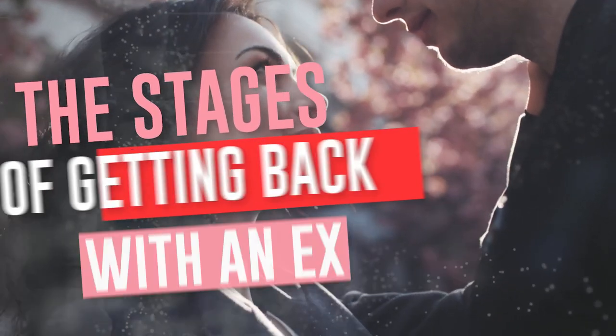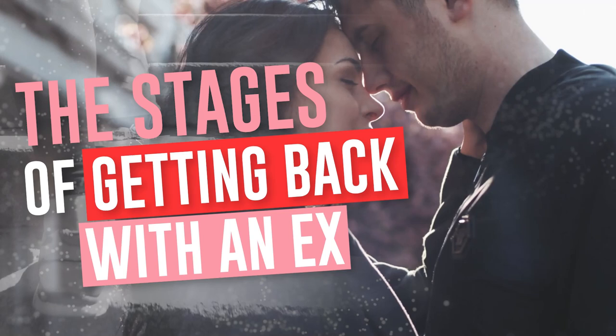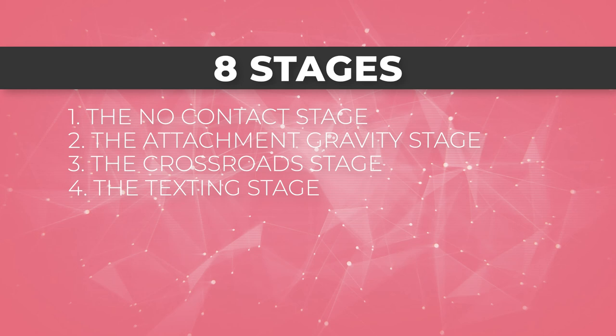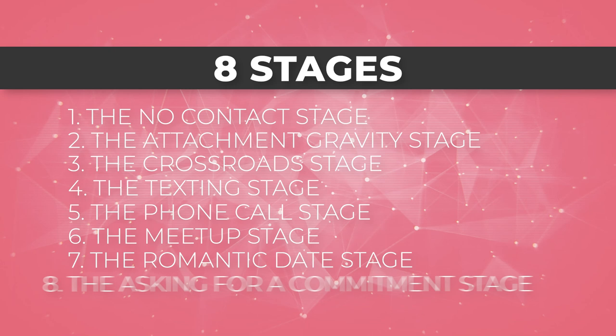Today we're going to talk about the major stages of getting your ex back. Specifically, we're going to be looking at eight stages: the no contact stage, the attachment gravity stage, the crossroads stage, the texting stage, the phone call stage, the meetup stage, the romantic date stage, and the asking for a commitment stage.